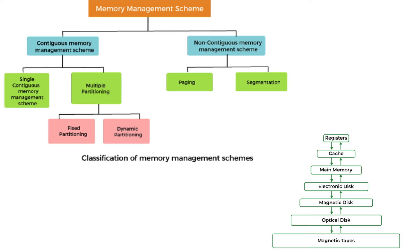Memory management is another fundamental function responsible for managing the computer's RAM. The operating system allocates memory to different processes, ensuring that each process has enough memory to function while preventing memory leaks and fragmentation. It uses techniques like paging and segmentation to efficiently utilize memory and protect the memory space of different processes, enhancing system stability and performance.